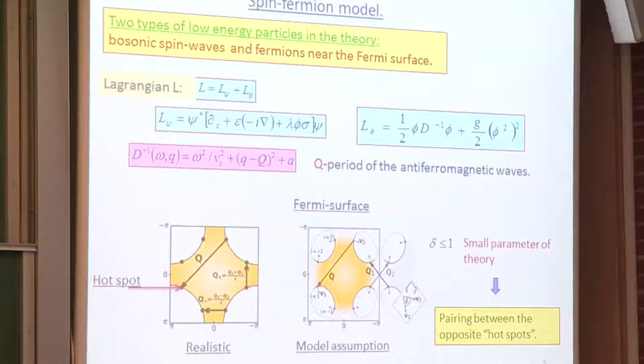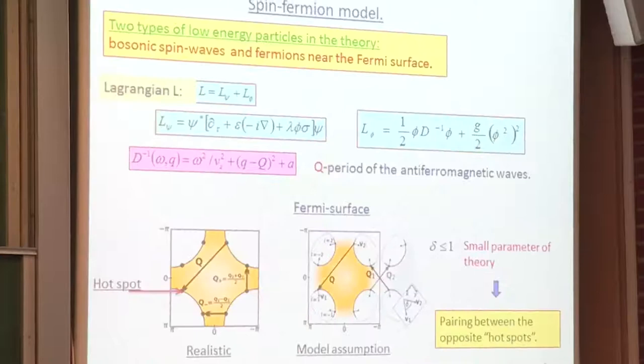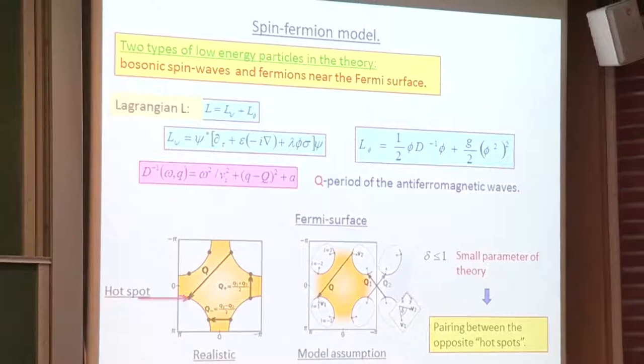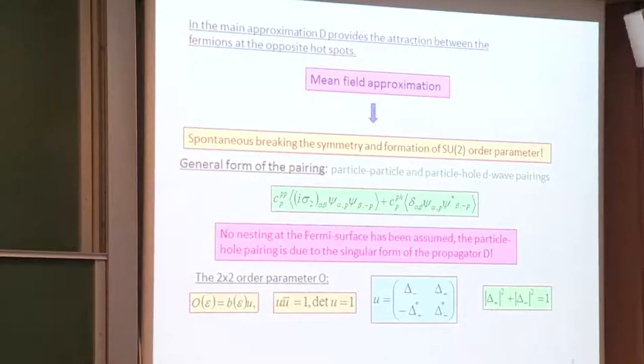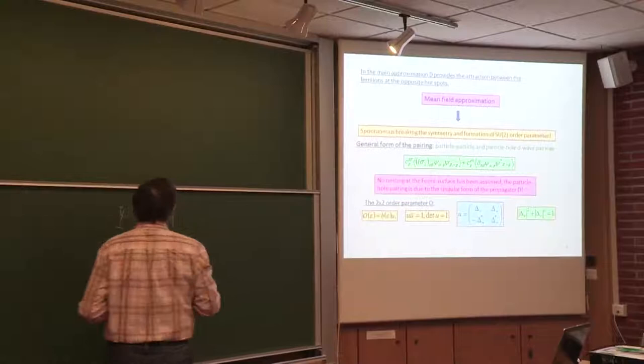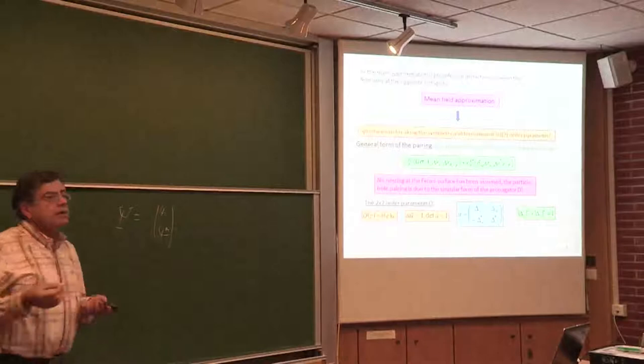The result of the study: first we did a mean field approximation. After integrating out the phi field we got some kind of pairing. Psi is a vector containing both psi capital and psi conjugate—four fermions. Then there is an approximate SU symmetry of this system.